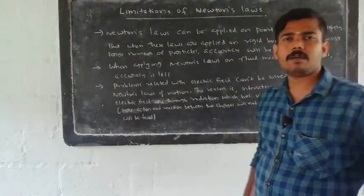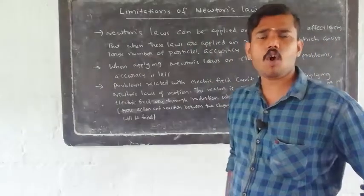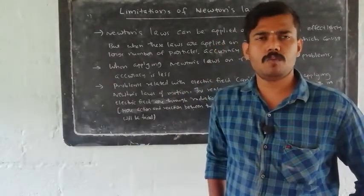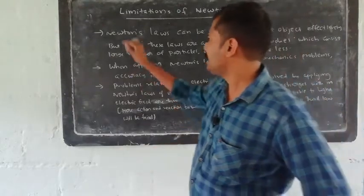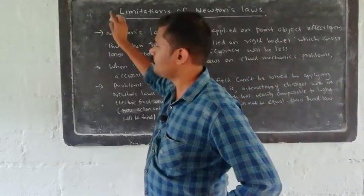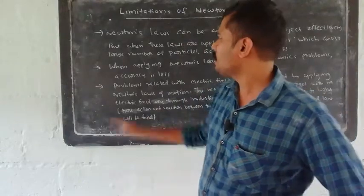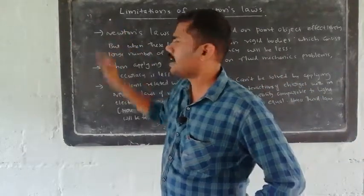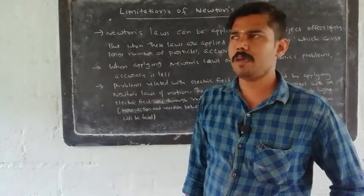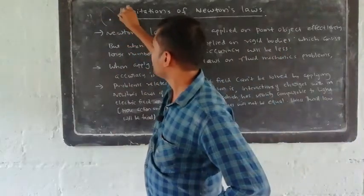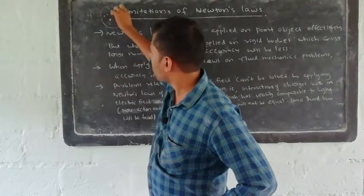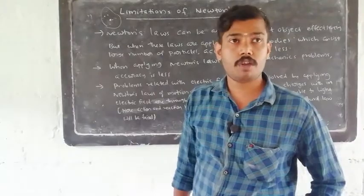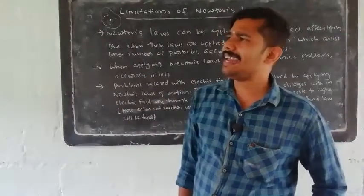Newton's Laws fail for another kind of problem. Problems related with rigid bodies and point objects — Newton's Laws are easy to apply for point objects, a single particle. But the problem is, what are rigid bodies? Rigid bodies consist of a number of particles — many point particles.